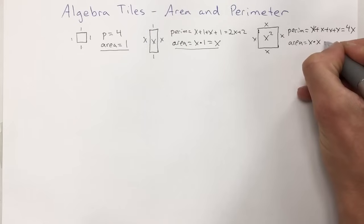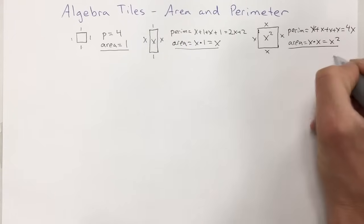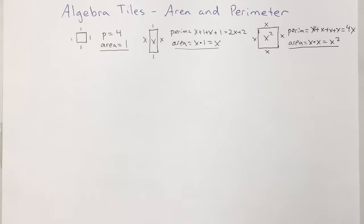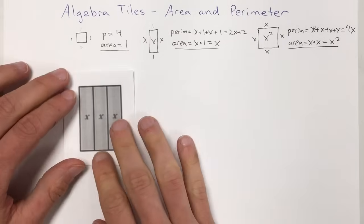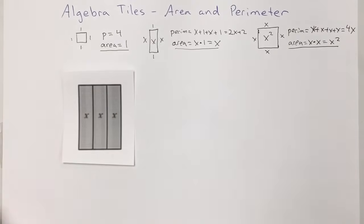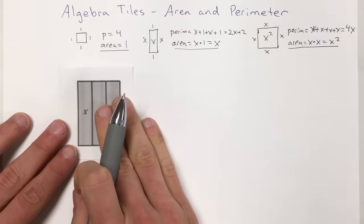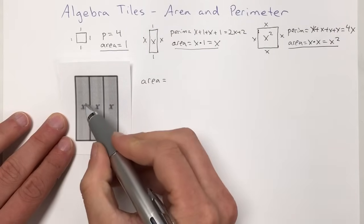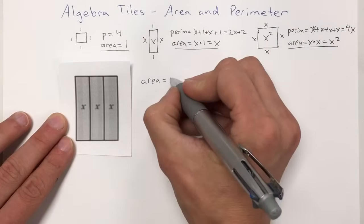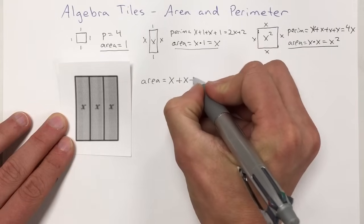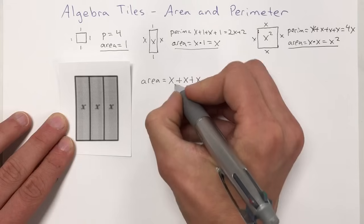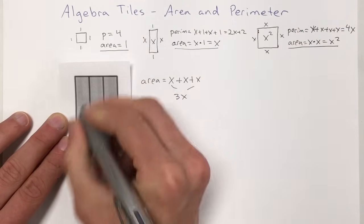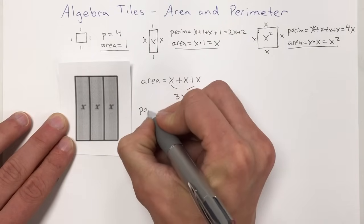We're going to use these values to solve problems. Here's an example: we have three of the long x-tiles stacked next to each other and we need to find the area and perimeter. For the area, we know each long tile has area x, so we add x plus x plus x. Combining those terms together, we get three x. So the area equals 3x.